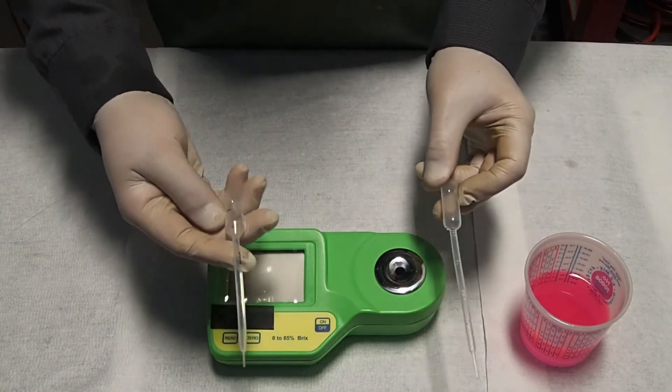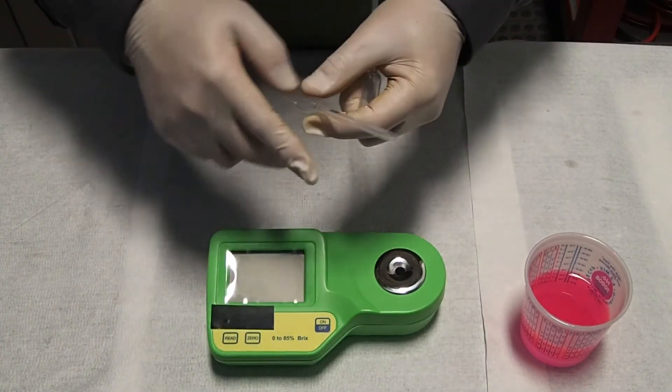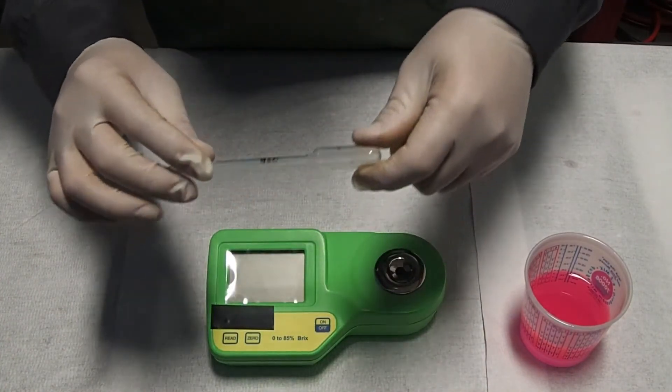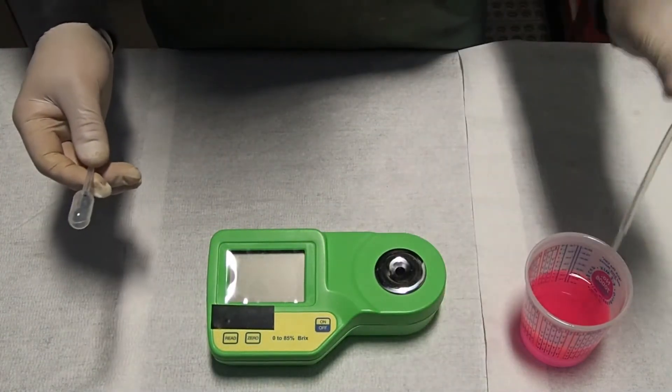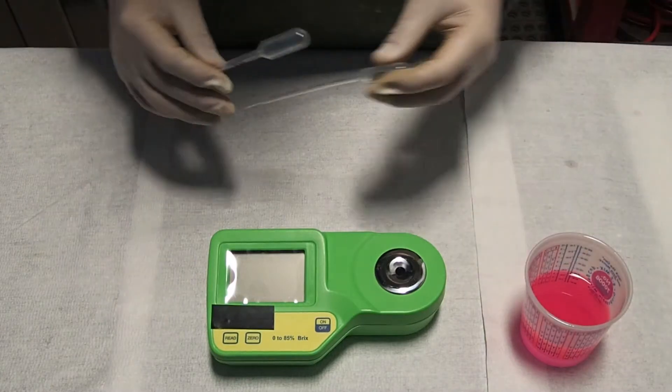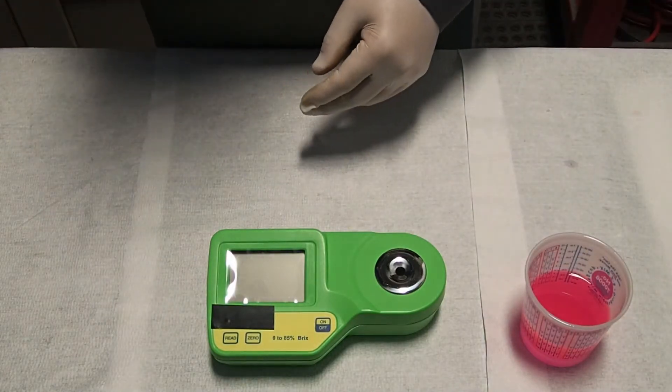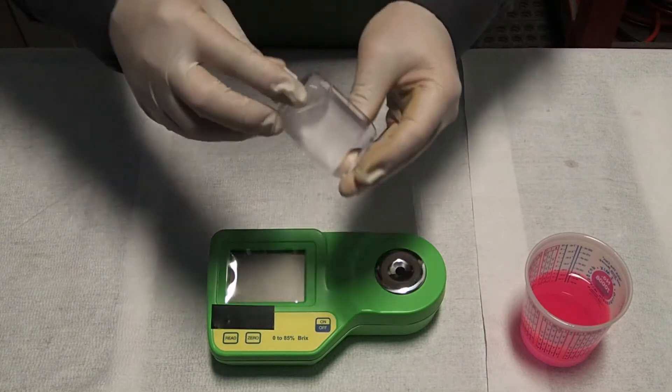One of them is to take distilled water - I have marked it, you see - and the other one is to take the sample of the emulsifier. Before checking the emulsifier concentration, we are going to use distilled water.